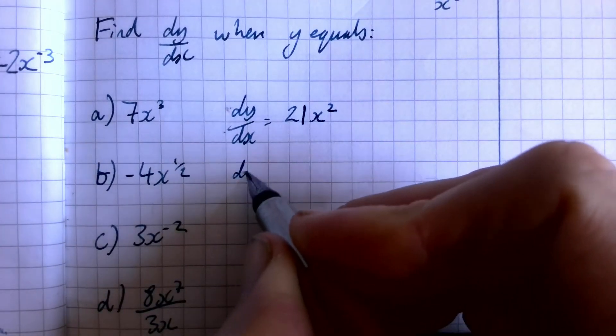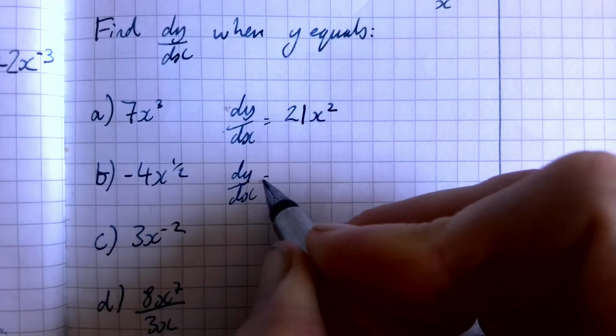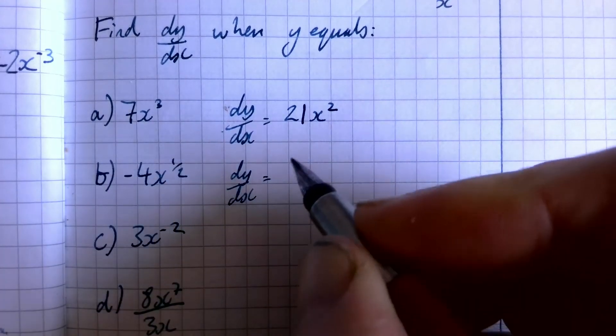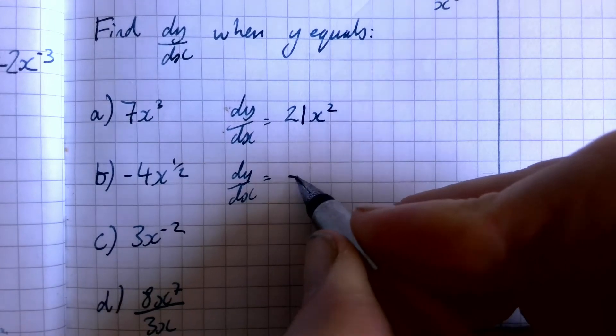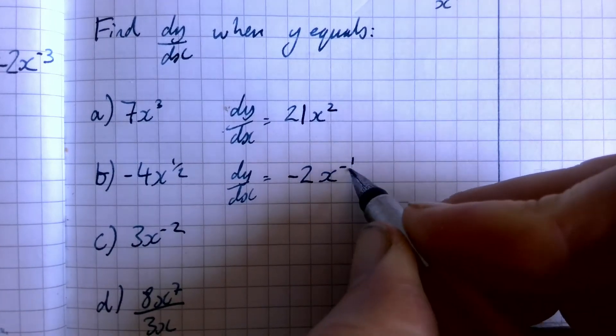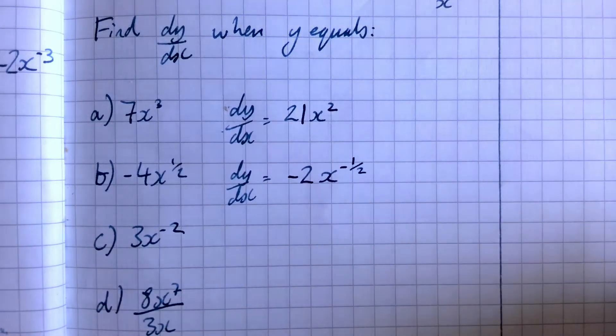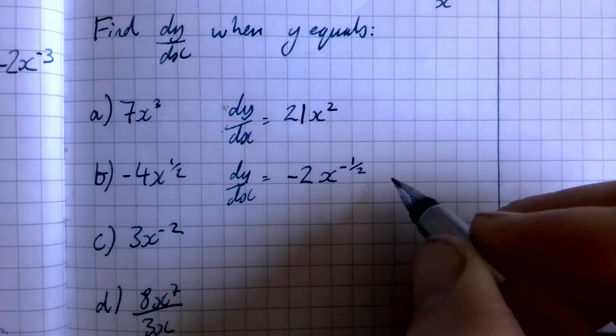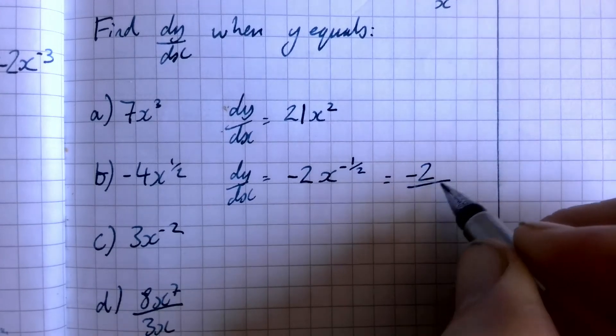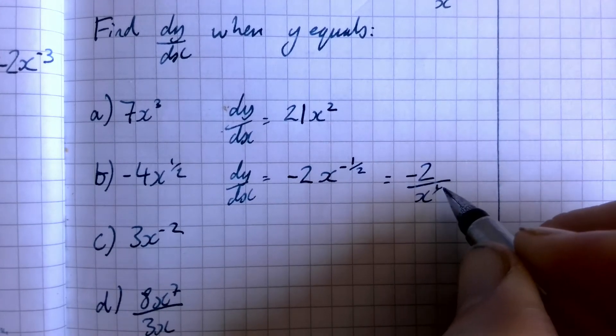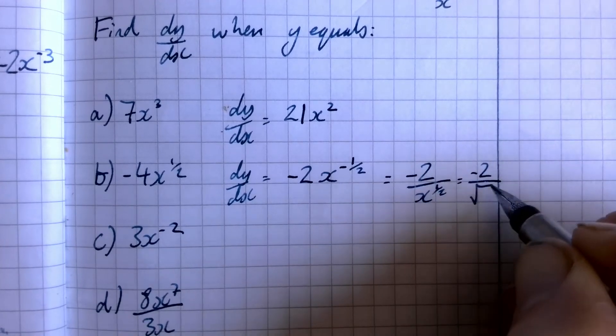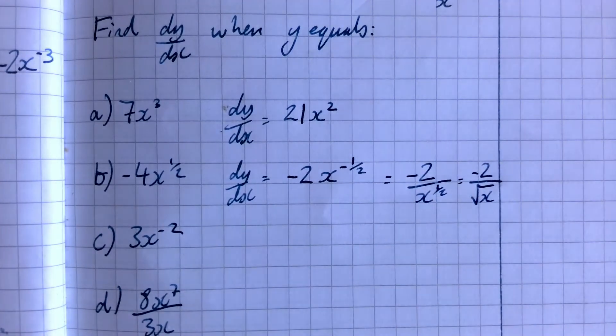For the next one here, dy over dx will be, we multiply negative four by a half. Well, a half of four is minus two. So that'll be minus two. And the power, we take one away from a half and we again, get minus a half. So we can say that that is going to be minus two over x to the power of half. Or we can say it's negative two over the square root of x.